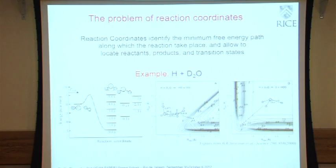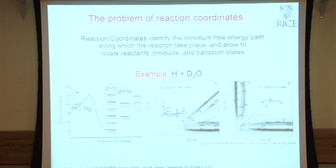So you want something that measures the progress of the reaction — this is a reaction coordinate. But even for a simple system like this, it's not easy to find a reaction coordinate, the best variable to describe the process. This is a Science paper from 2000, where they used different sets of coordinates: the distance between O and H, the distance between O and D, or the distance between the oxygens — different coordinates — to study the free energy as a function of these coordinates and try to quantify the reaction.